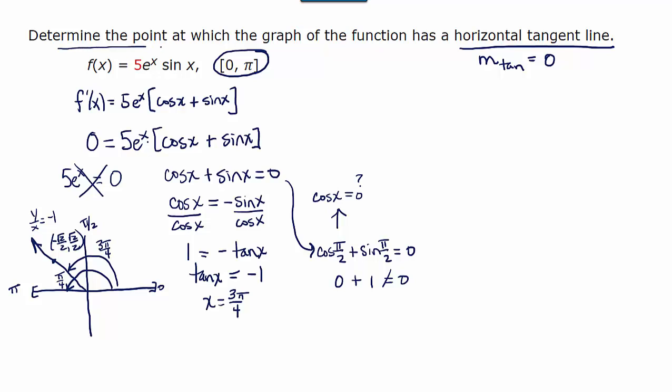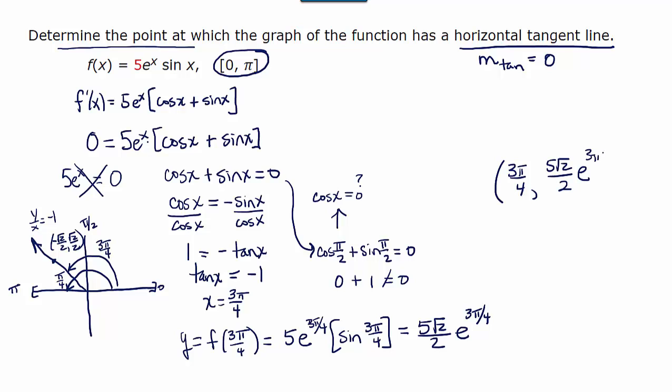So we were asked to determine the point at which the graph has a horizontal tangent line. Let's go ahead and find the y coordinate f of x. f of 3 pi over 4 is 5e to the 3 pi over 4 times the sine of 3 pi over 4. Now remember, the sine of 3 pi over 4 is the y coordinate root 2 over 2. So this is 5 root 2 over 2 e to the 3 pi over 4. The pair of coordinates are 3 pi over 4 comma 5 root 2 over 2 times e to the 3 pi over 4.